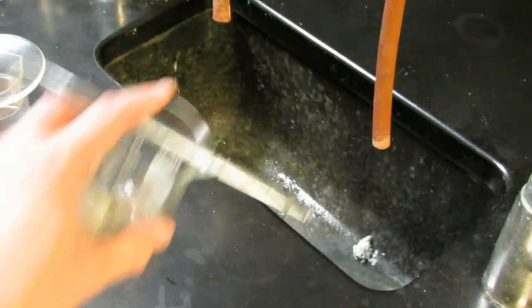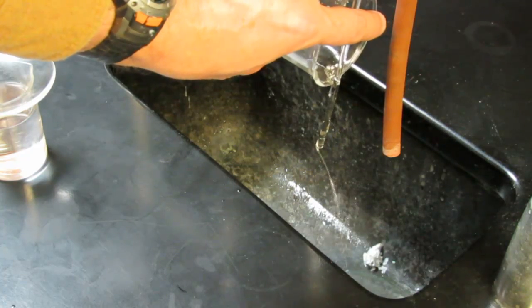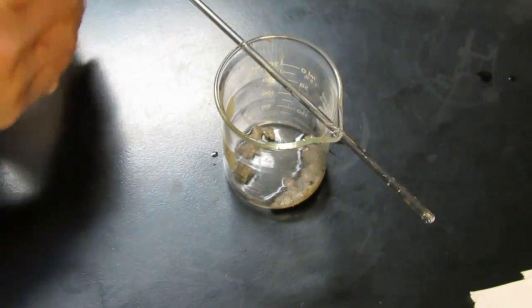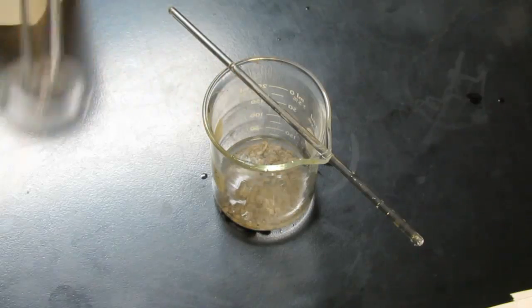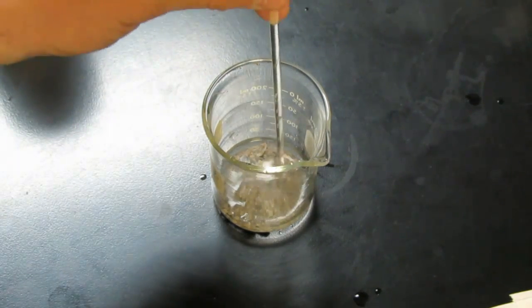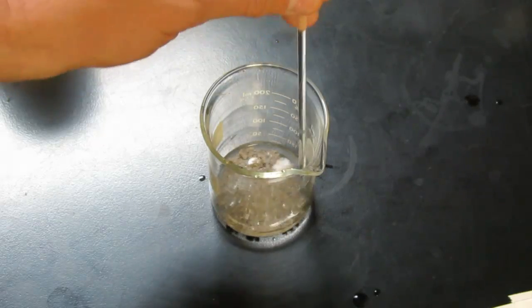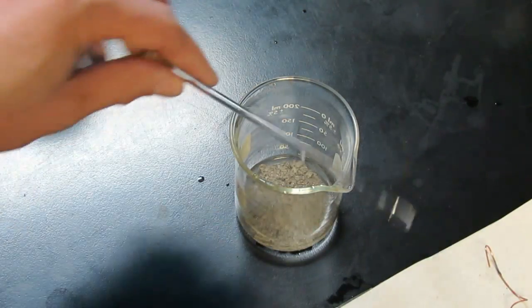So now we'll decant again. You guys will be really good at decanting by the time we're finished with this step. Once again try not to lose any silver. And we'll repeat that process again. So we're going to get another aliquot of about 10 mils. Add that to the beaker. Use our stirring rod to mix that up ever so gently.